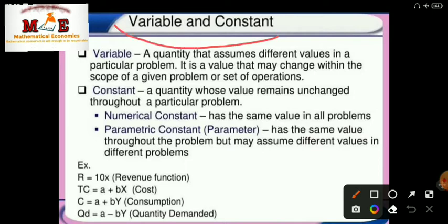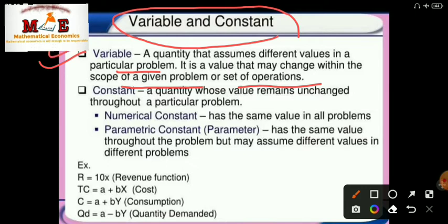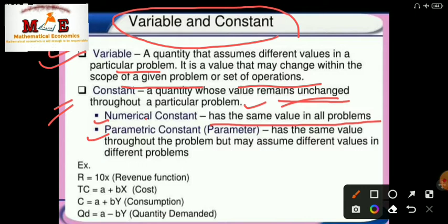Now, variables and constants. A variable is a quantity that assumes different values in a particular problem — a value that may change within the scope of a given problem. Anything which undergoes change is known as a variable. A constant is a quantity whose value remains unchanged throughout a particular problem. There are two types of constants: numerical constant and parametric constant. A numerical constant has the same value in all problems, whereas a parametric constant has the same value throughout a problem but may assume different values in different problems.